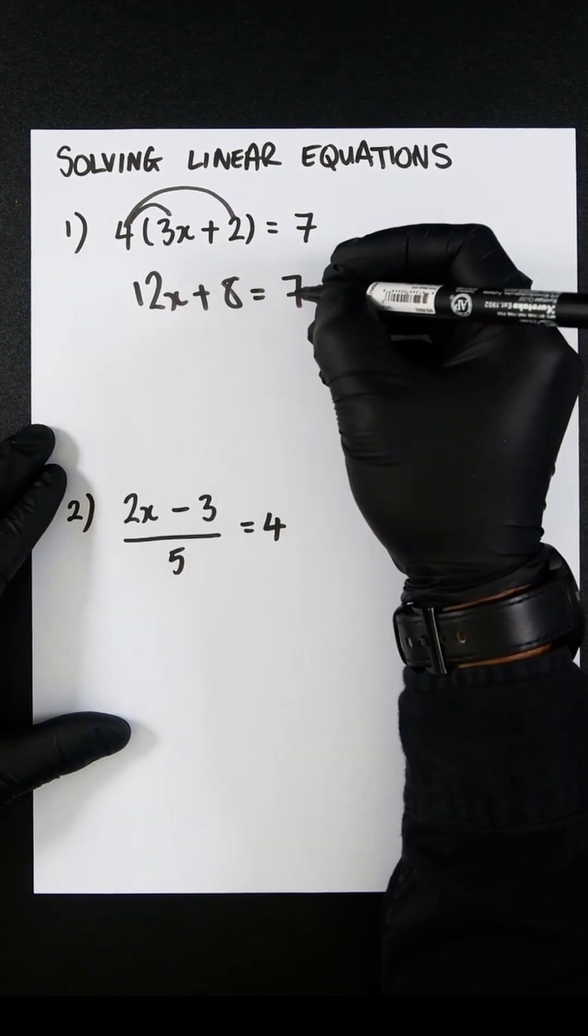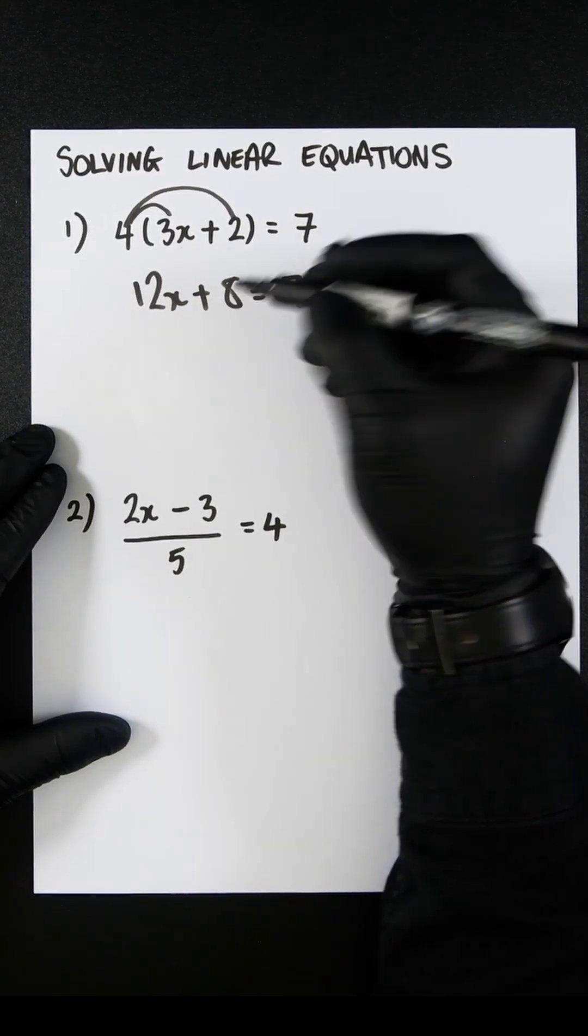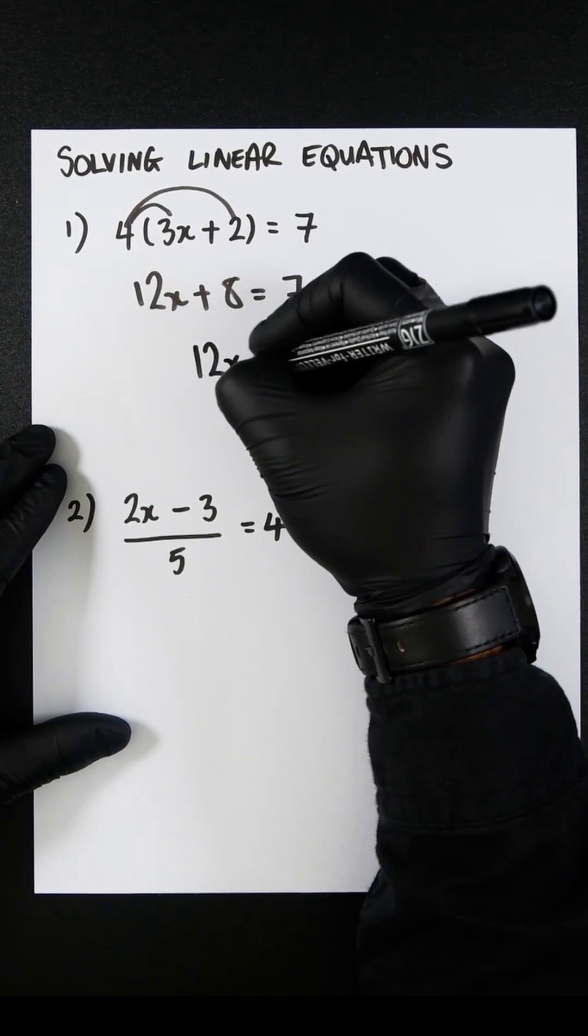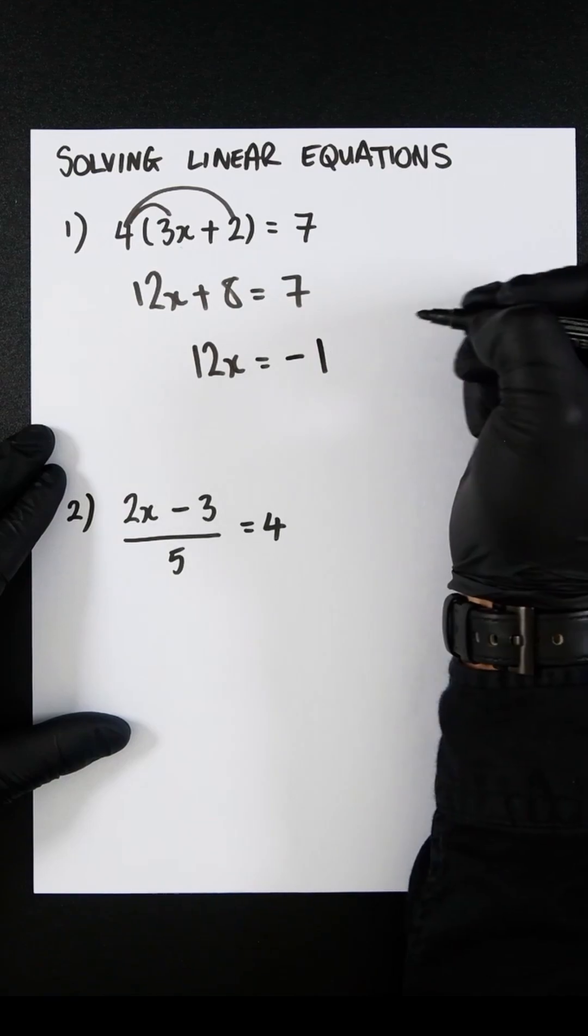So if we minus 8 from both sides, the 8 on the left-hand side will cancel out, and 7 minus 8 would be minus 1. So you're going to get 12x equals minus 1.